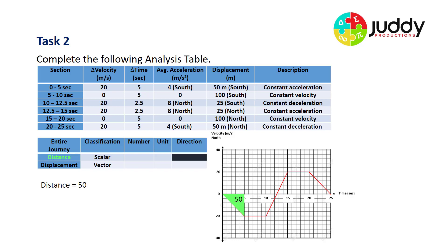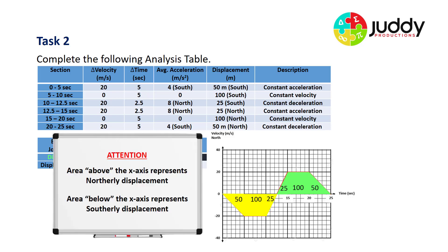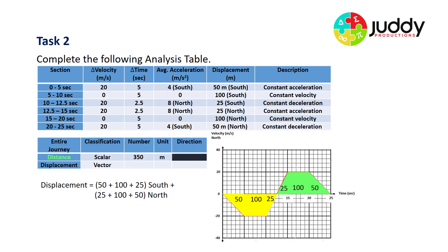Let's look at the distance: 50 in the first section, 100 in the second, 25 in the next 2.5 seconds, another 25, another 100, and a final 50 — giving a total distance traveled of 350 meters. Areas below the x-axis represent southerly displacements (175 meters south), and areas above represent northerly displacements (175 meters north). They effectively cancel out, giving a displacement of zero. This vehicle has traveled as far south as north and ended up at exactly the same position it started.